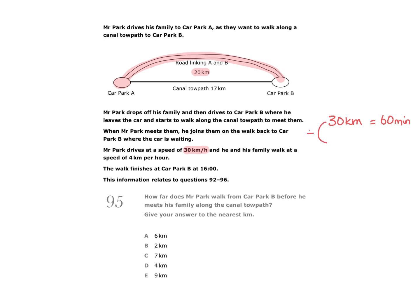If I divide this value by 3, then I would have 10 kilometres. And if I do the same to the time, divide that by 3, then I would have 20 minutes. So that means he can travel 10 kilometres every 20 minutes, and therefore that 20 kilometre journey would take him 40 minutes. So after 40 minutes, Mr Park would arrive at car park B.